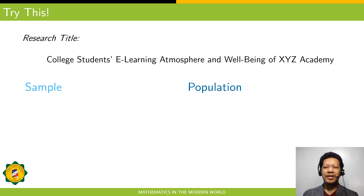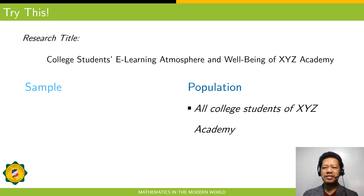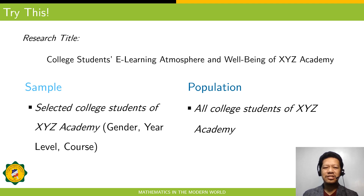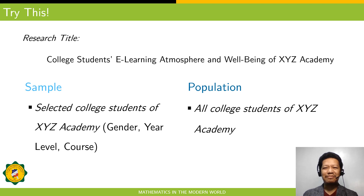Now you have to try this. Please identify the population and sample in this research title. The population is all college students of XYZ Academy, while the sample is the selected college students of XYZ Academy — maybe selected using profile variables like gender, year level, or course, or sampling techniques like simple random, stratified, cluster, convenience, or systematic sampling.